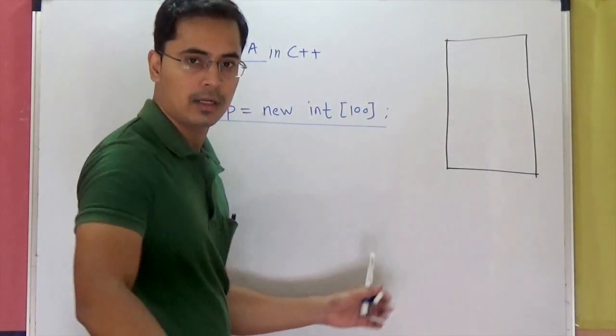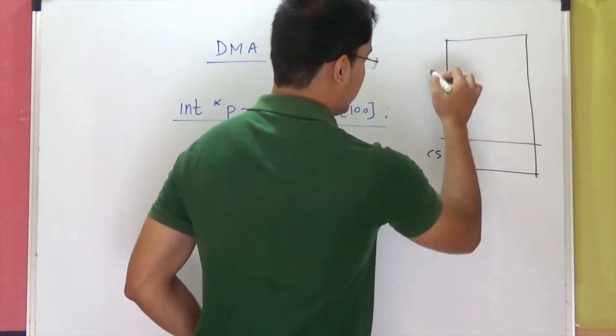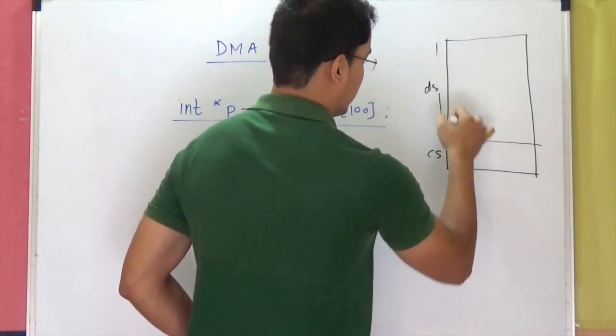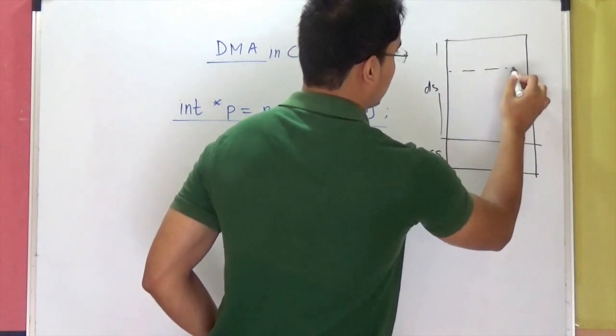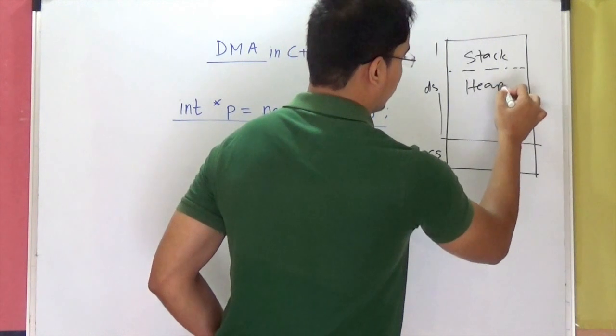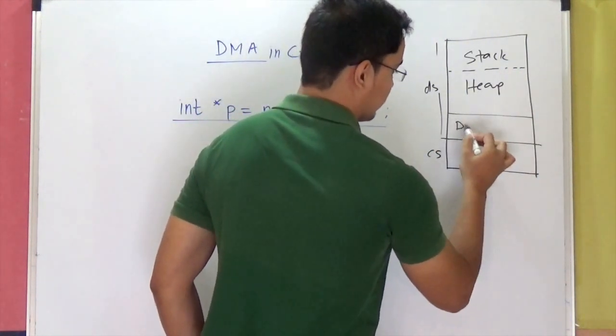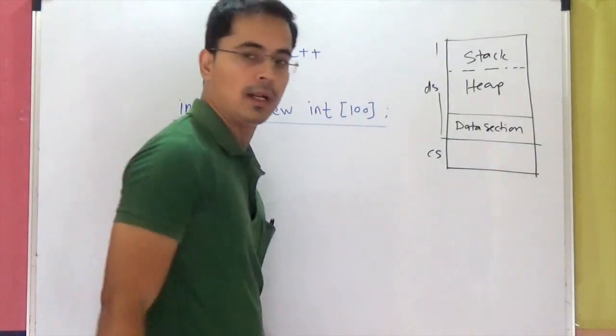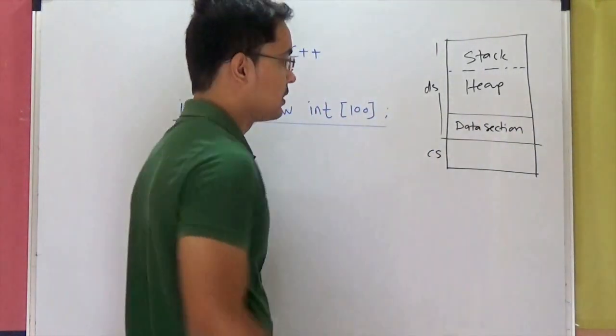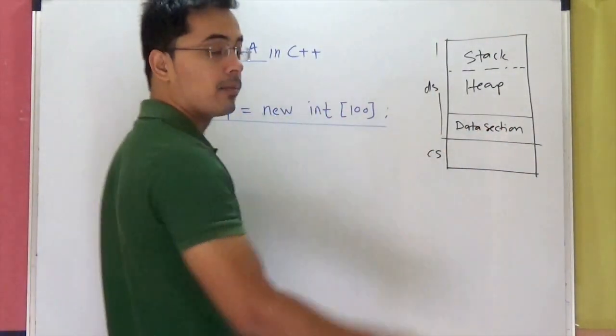We talked about this in detail in our C videos. So this is your code segment. This is your data segment. There is your stack and heap with a flexible boundary and there is your data section. Data section is used to store global static kind of variables. Stack for local variables and heap for allocating memory dynamically.